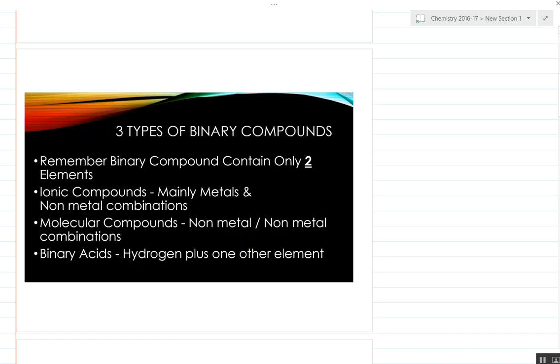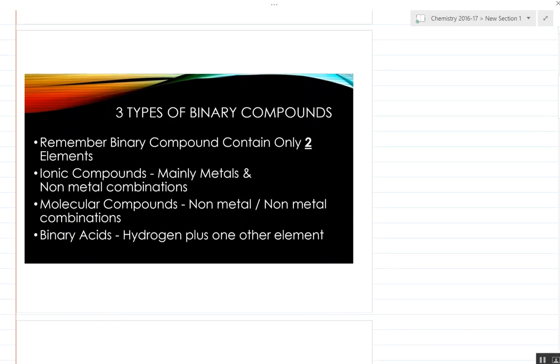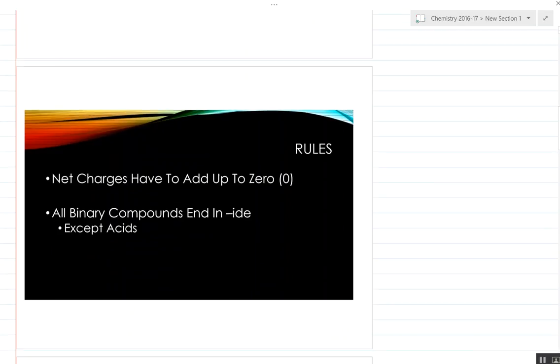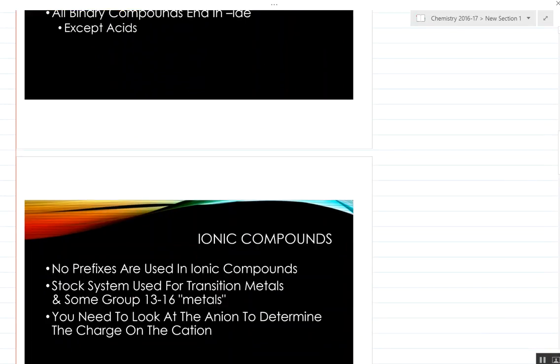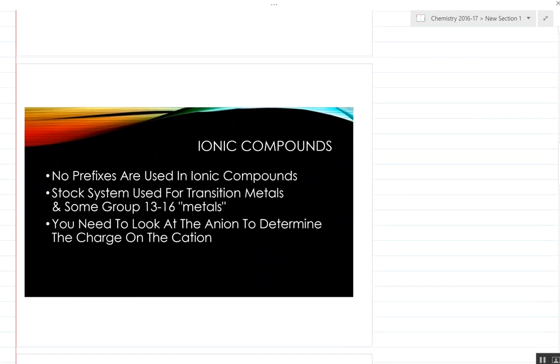Remember the rules: net charges have to add up to zero, and all binary compounds end in 'ide' except for acids, which we'll talk about in part three. Ionic compounds get no prefixes. The only time there's something different is when we're in the stock system for transition metals and some of the group 13 through 16 metals.